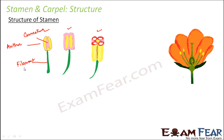Filament is nothing but the stalk which bears the anthers. The filament or stalk bears the anthers at its top. Talking about the anther, it is a two-lobed or bi-lobed structure at the tip of the filament. If you look at this, you can see the two lobes of the anther. The yellow colored structure is the anther.